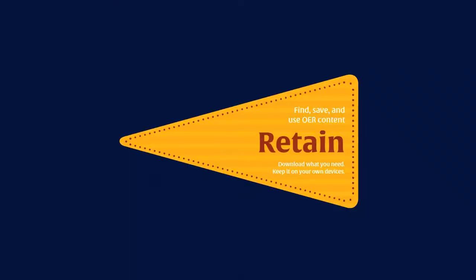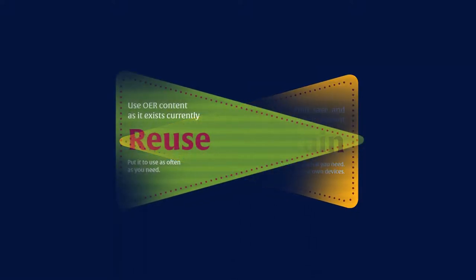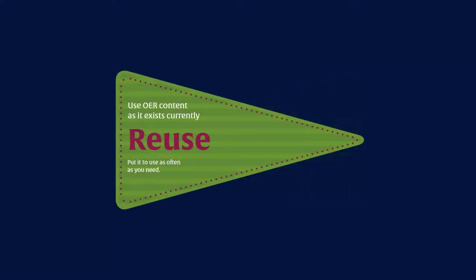The 5 R's include Retain, the right to make, own, and control copies of the content. Reuse, the right to use the content in a wide range of ways.